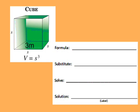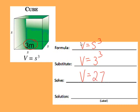The first formula is an easy one: volume of a cube. The formula is we take one side and cube it. The sides are all the same on a cube, and this one is 3 meters, so we're going to plug in 3 for our side. We're going to cube 3, which is 3 times 3 times 3, and then label our solution.